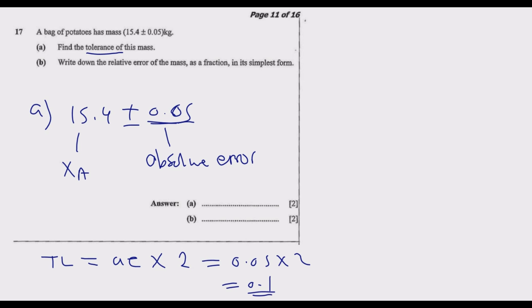So we have 0.05 multiplied by 2, which gives us 0.1. Therefore, 0.1 kg is the tolerance of this mass. That's how you get it for question a, earning two marks. Now let us go to part b.